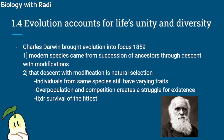Evolution accounts for life's unity and diversity. This part is basically about Charles Darwin, who brought evolution into focus in 1859. He had two important concepts. The first is that modern species came from a succession of ancestors through descent with modification — like the classic image where a monkey gradually becomes a human. Monkeys were essentially our ancestors, and their descendants had small modifications over centuries, eventually resulting in humans.